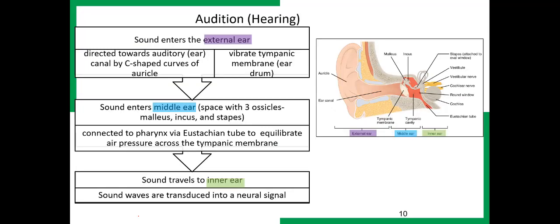The sense of hearing, or audition, begins when sound enters through the external ear and is directed toward the auditory canal. The tympanic membrane vibrates based on the sound, which connects to the pharynx via the eustachian tube, and the signal is converted into a neural signal that travels through a cranial nerve.